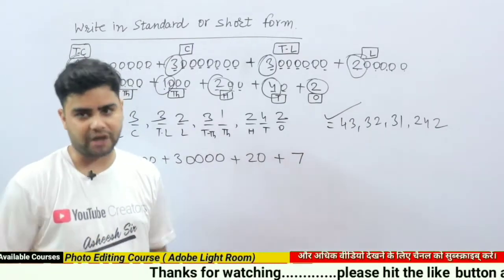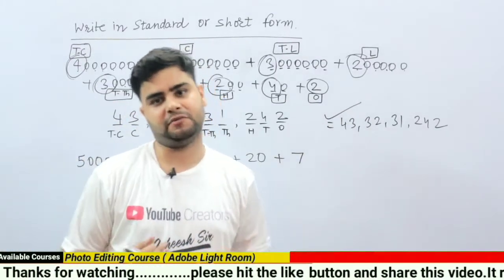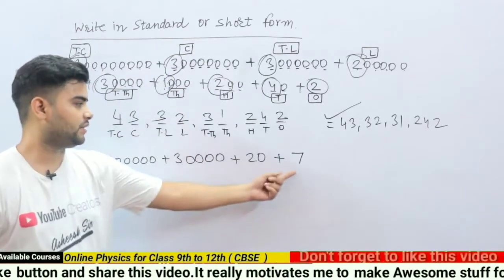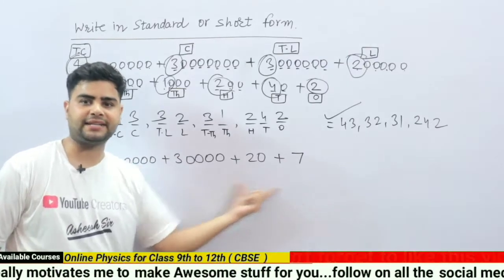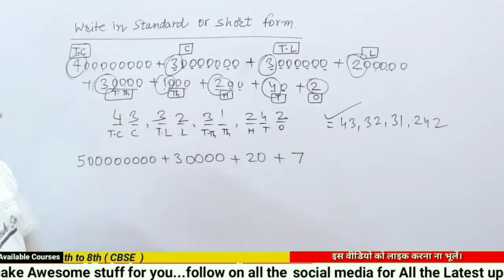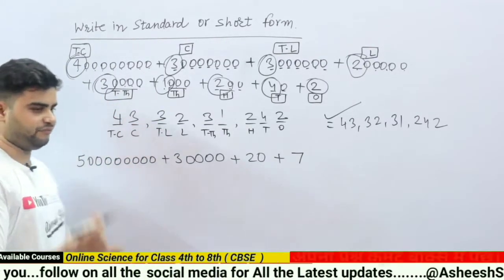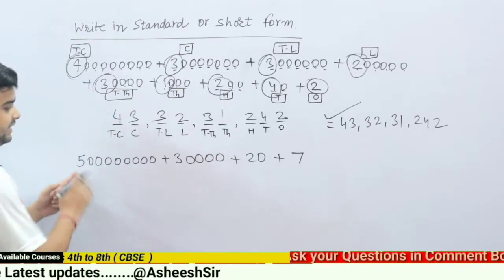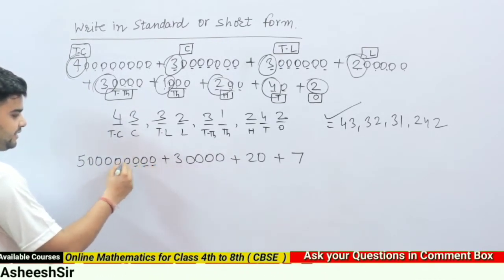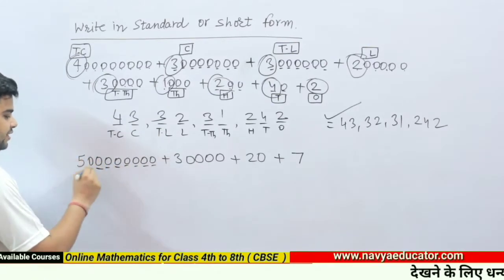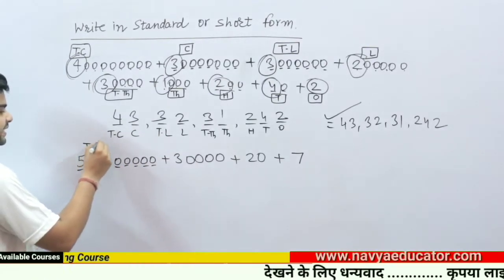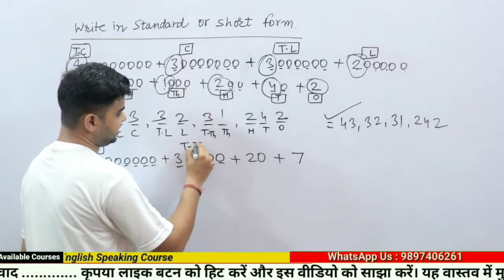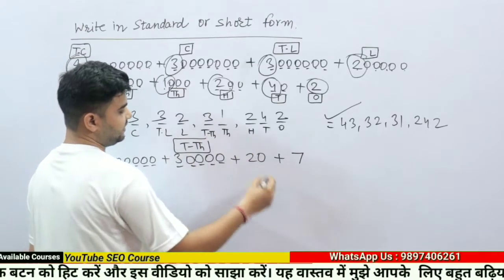I hope you got it — it was a very easy method. Now I am going to show you a second example. First of all, we will find the place of these digits: ones, tens, hundreds, thousands, ten thousands, lakh, ten lakh, crore, ten crore. This digit's place is ten crore. The next digit's place, counting: ones, tens, hundreds, thousands, ten thousands — this is ten thousand.